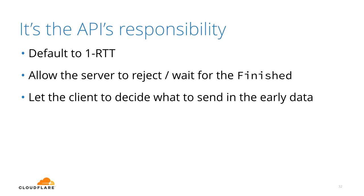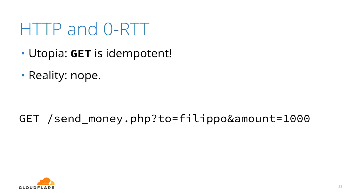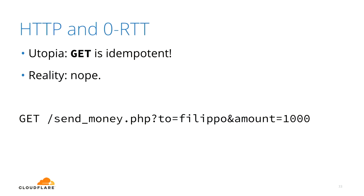What about HTTP? HTTP should be easy — the spec says GET requests are idempotent and must not change anything on the server. So we'd just allow GET requests in early data, because even if they're replayed, nothing happens. Except — you will definitely find some server on the internet with something like 'send_money.php?to=Filippo&amount=X' as a GET request. If an attacker records this early data and replays it against a different server in the pool, it gets executed twice.